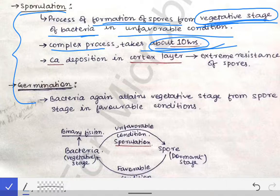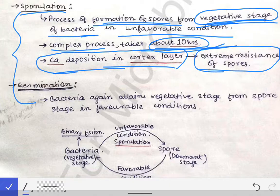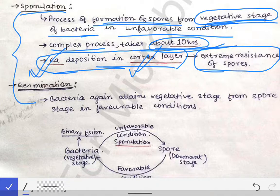This 10-hour duration is an important MCQ point. During sporulation, calcium deposition occurs in the cortex layer — the second layer outside the core. This calcium deposition provides extreme resistance to the spore.